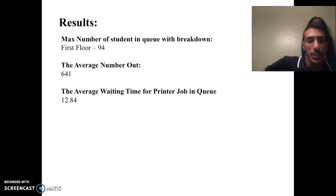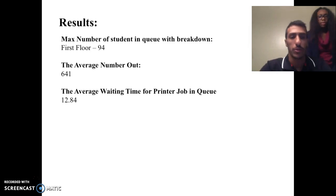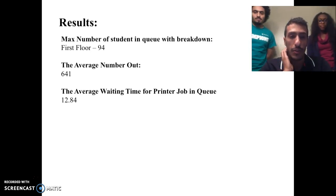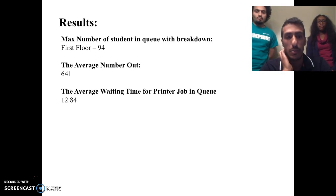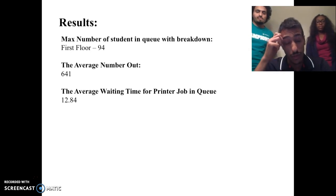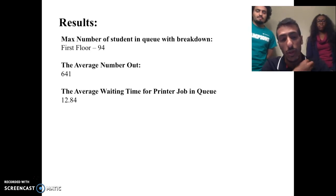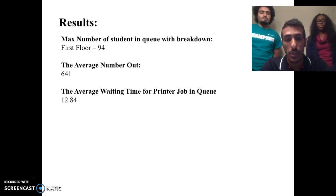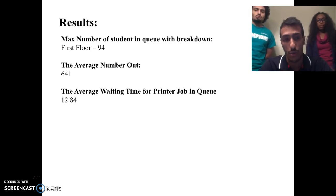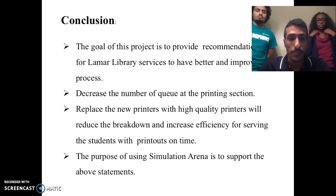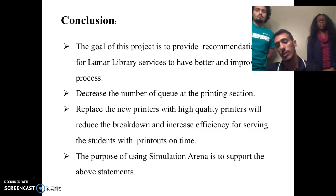Here I'm going to talk about the results we obtained from our project. The first result is the maximum number of student inquiries with breakdowns on the first floor, which was 94. The average number out was 641. The last result is the average waiting time for a printing job in the queue, which was 12.84 minutes.